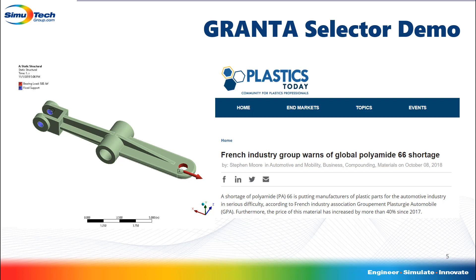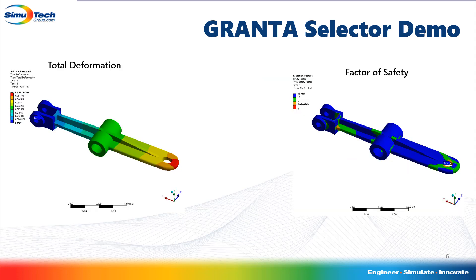To the left, you can see the rocker arm with the loading conditions being applied to it. To ensure that the new material works for our design, we want to keep our total deformation at or below the current maximum deformation we are seeing of 0.058 inches. We also want to keep the factor of safety at or above the current value of 1.65. In order to do this, we need to find a material with a Young's modulus and yield strength higher than that of PA-66. Finally, we want to use the same manufacturing process for the rocker arm, which is an injection molding process.